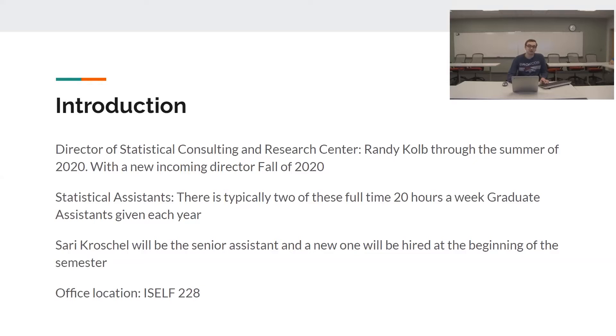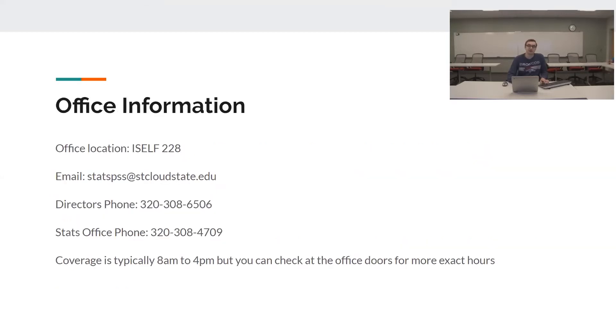Additionally, our office location is in the ISELF building on St. Cloud State in room 228. You can see our contact information here. Our email is statSPSS at St. Cloud State EDU as well as both of our phone numbers. It is more likely that you'll get in touch with someone sooner if you use the Stats office phone number, but email is probably the best option. Or you could stop in. Coverage is typically 8 a.m. to 4 p.m. but you can check at the office doors for more exact hours.